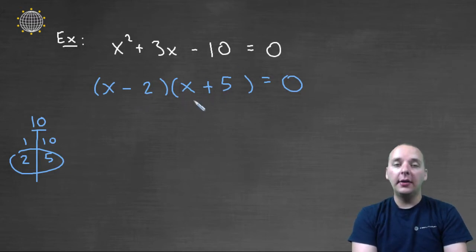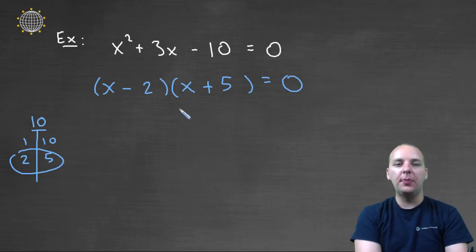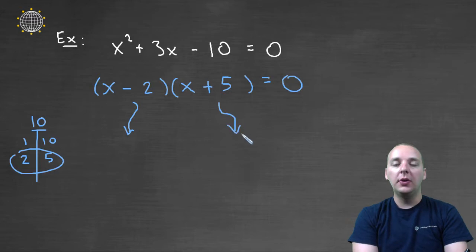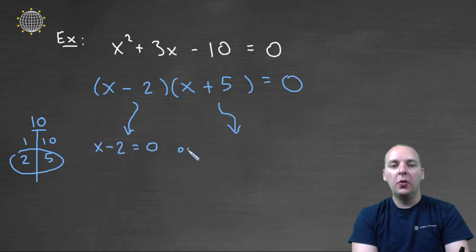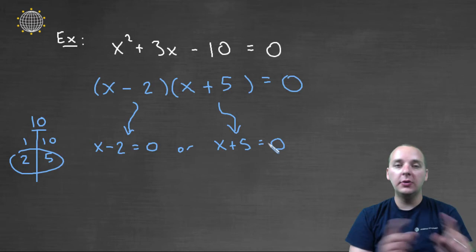And if a product equals zero, here's the zero property, then either the first factor equals zero or the second factor equals zero. So we'll take x minus two equals zero or x plus five equals zero. One of those has to be true, because if your product equals zero,